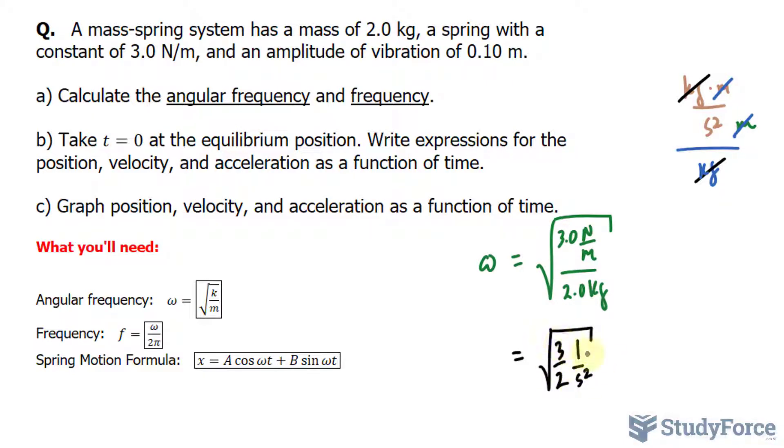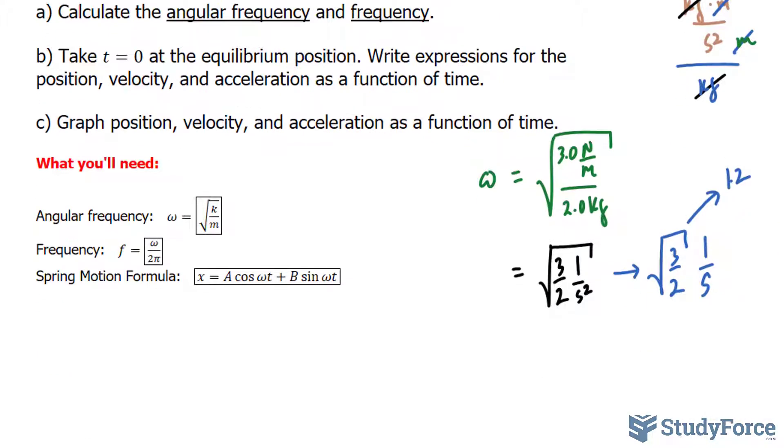So technically, we have the square root of 3 over 2, and the units are 1 over second squared. The square root of 1 over s to the power of 2 is simply 1 over s. The units for angular frequency is 1 over seconds. And just for reference, the square root of 3 over 2 is roughly 1.2, so it's 1.2 per second.